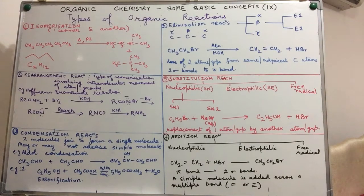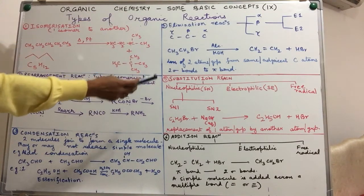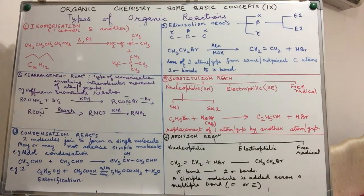Welcome dear students to the 9th video in the series Organic Chemistry Some Basic Concepts. The heading that we are going to cover today is a very generalized one where we talk about the various types of organic reactions. We have classified them into six categories: isomerization, rearrangement, condensation, elimination, substitution and addition reactions.